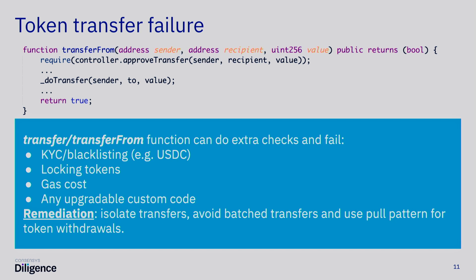Lots of tokens are pretty much upgradable. The controller is a separate contract that approves some transfers and it's usually upgradable by the owner. To make it safer, you can isolate all of your transfers and avoid batch transfers — avoid for loops. If you have transfers in a for loop, one of them might fail and it can block your entire pipeline and freeze funds. Basically just use the pull pattern for all possible token withdrawals wherever you can.